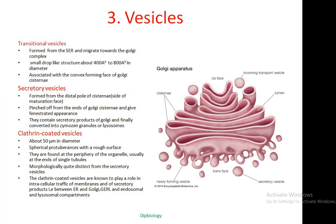The main function of clathrin-coated vesicles is intracellular trafficking, allowing secretory products to move between the endoplasmic reticulum and Golgi, and also between GERL and endosomal and lysosomal compartments. The convex region forms the cis-face and the concave region forms the trans-face. The lumen of the cisternae contains a fluid-like matrix, and the secretory vesicles bud from the trans-regions, while clathrin-coated vesicles have a rough surface and function in cellular trafficking.